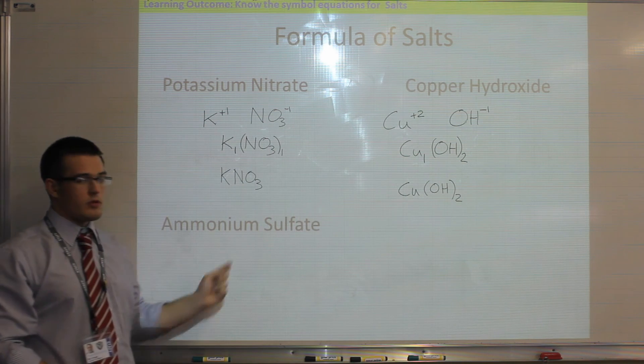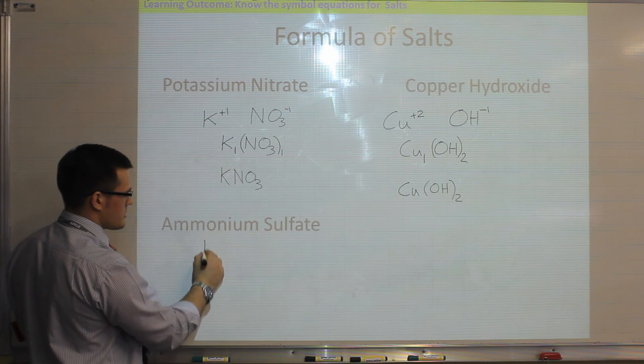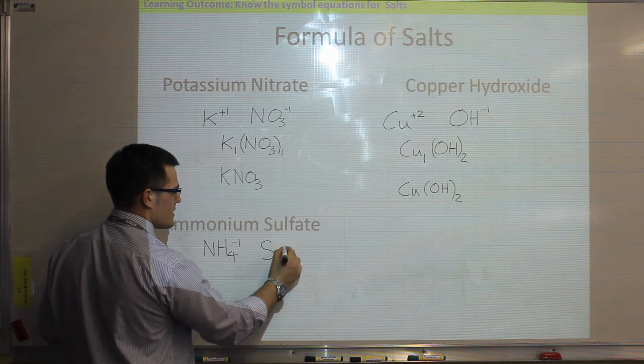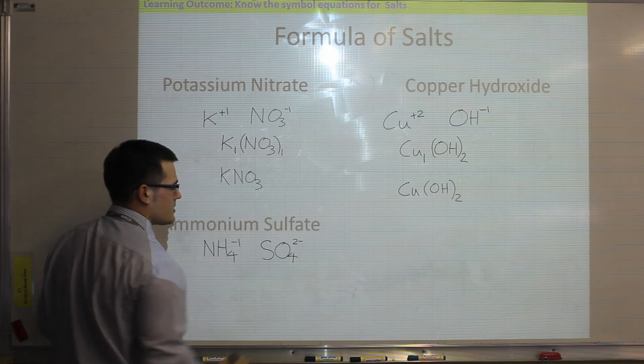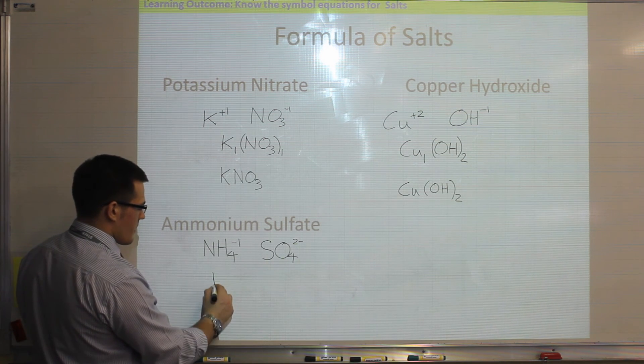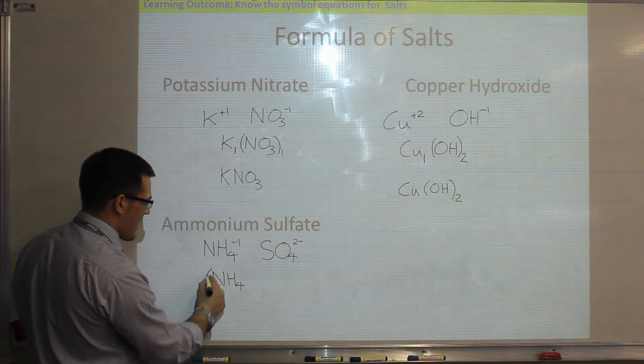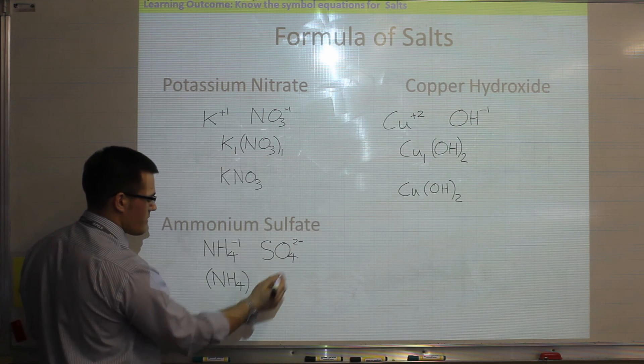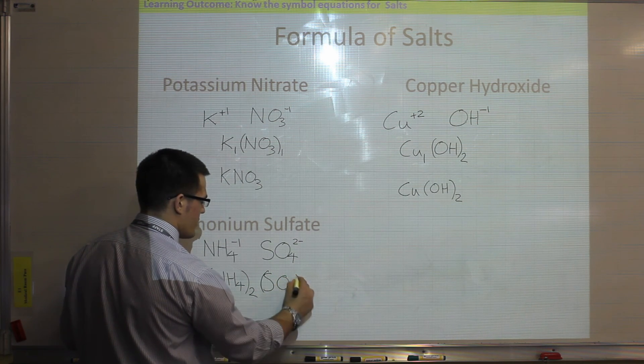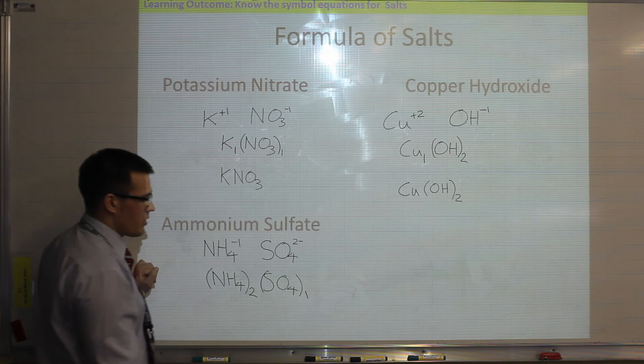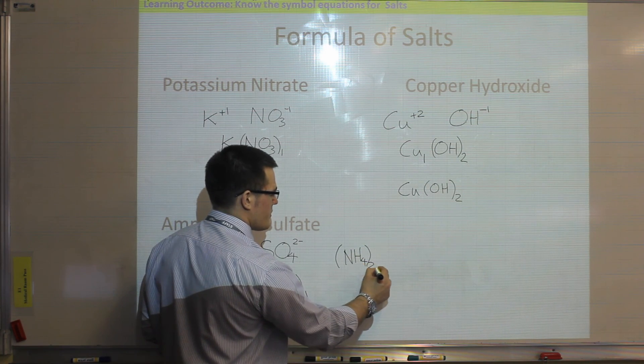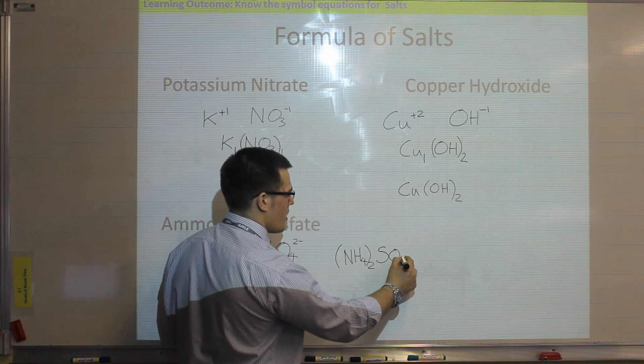Last example we'll look at is ammonium sulfate, so both of these are now polyatomic ions. So ammonium is NH4, and that's plus 1, and sulfate is SO4 2-, and again, you just have to learn the formula of those polyatomic ions. So we write them out again, so NH4, and to work out how many of those we need, we times it by the charge on the sulfate, which is 2, and then we write out our sulfate, and to work out how many of those we need, we times it by the charge on the ammonium, which is just 1. So to write that out neatly, I can now put my NH4, and we need 2 of those, and I don't need to write the 1, so I can then just put SO4.